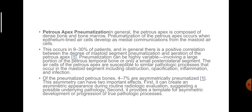Of the pneumatized petrous bones, 7% are asymmetrically pneumatized. This asymmetry has two important effects: first, it can create an asymmetric appearance during routine radiologic evaluation suggesting possible underlying pathology; second, it provides a template for asymmetric development or progression of true pathologic processes.